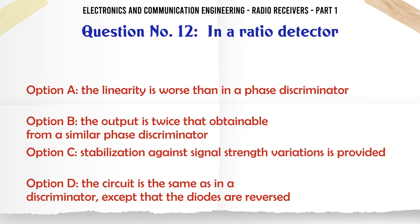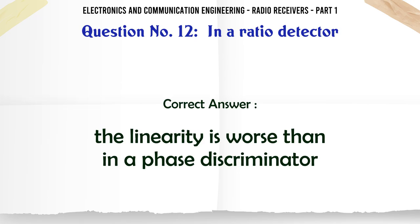In a ratio detector: a. The linearity is worse than in a phase discriminator. b. The output is twice that obtainable from a similar phase discriminator. c. Stabilization against signal strength variations is provided. d. The circuit is the same as in a discriminator except that the diodes are reversed. The correct answer is the linearity is worse than in a phase discriminator.